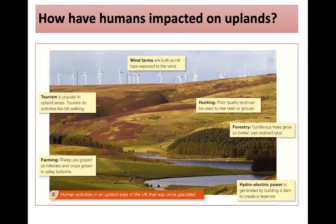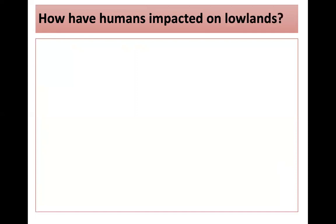What have we done to our upland environments? We've built wind farms because they're exposed on top of hills and we want to create wind energy. We use uplands for hunting, forestry — coniferous trees grow on well-drained land — hydroelectric power, farming, and tourism. People like walking in these beautiful environments.